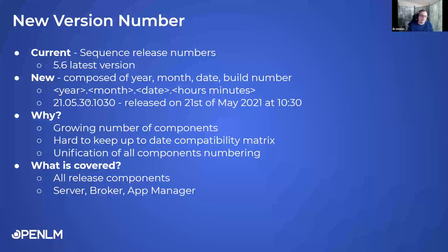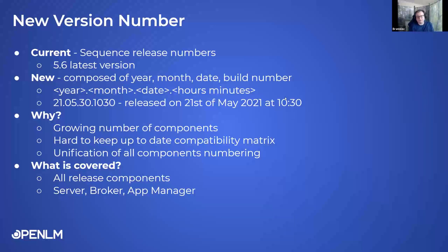As you can see, I'm showcasing a simple example here: 21, 05, 30, 10, 30. This version was released, or will be released, on the 21st of May 2021 at exactly 10:30 — so this is when the release build is actually finished. Why do we make this change? It may seem a little bit confusing at the beginning, but the logic behind it is clear.